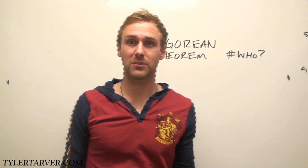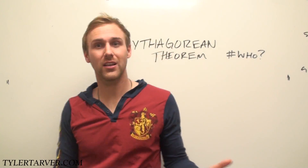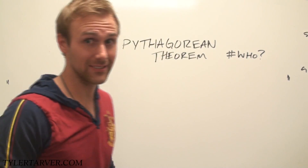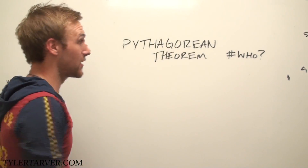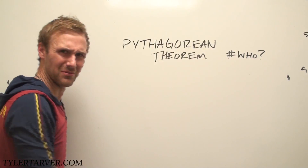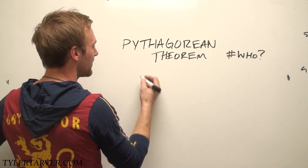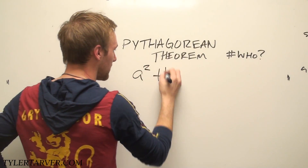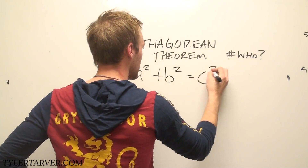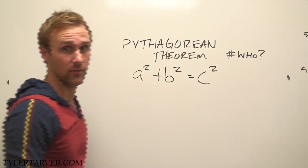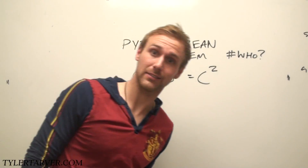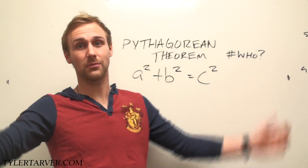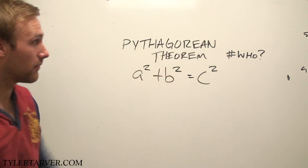This guy named Pythagoras, once upon a time, he was like, 'Yo, cool right triangle. Let's make a theorem.' That's exactly how that happened. Hashtag who? Pythagoras. The Pythagorean theorem is A squared plus B squared equals C squared. If you're thinking, 'Wow, that's easy, I know my ABCs,' well, you just need to know A, B, C, and squared.